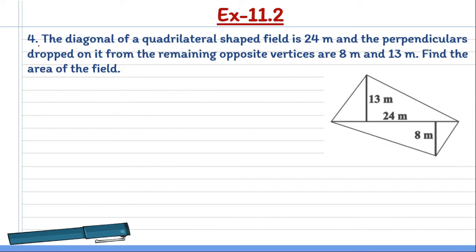Now, question number 4 is, the diagonal of a quadrilateral shaped field is 24 meter and the perpendiculars dropped on it from the remaining opposite vertices are 8 meter and 13 meter. The diagonal of a quadrilateral shaped field is 24 meter.